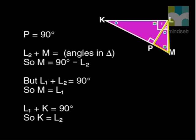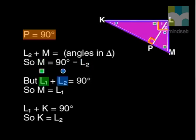Look at triangle LPM. We know that angle L at P is 90, and so L2 plus M is 90 because of sum of angles in a triangle. So, M must be 90 minus L2. But angle L is also 90 in triangle KLM. So, L1 must be 90 minus L2. That's the same as M.